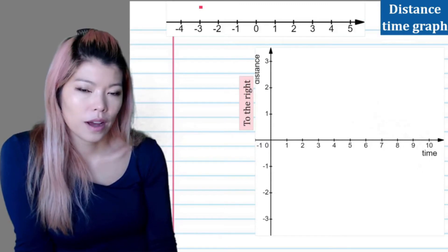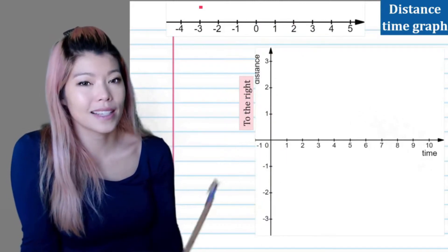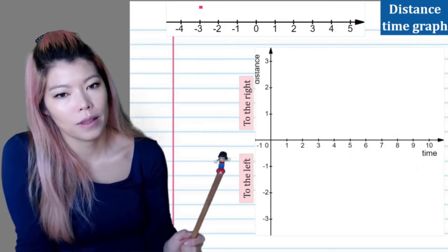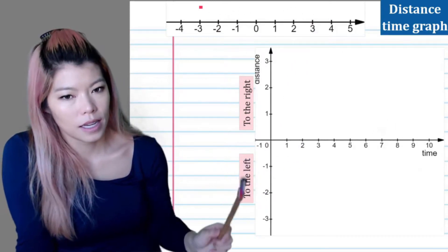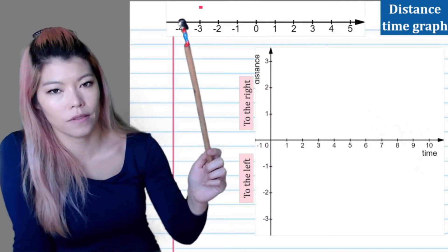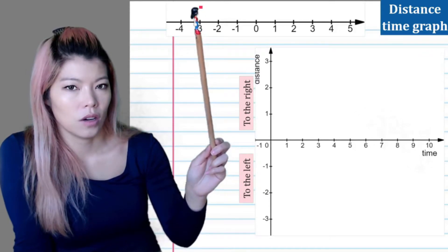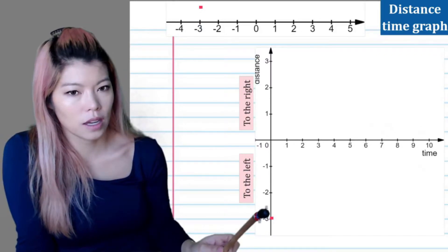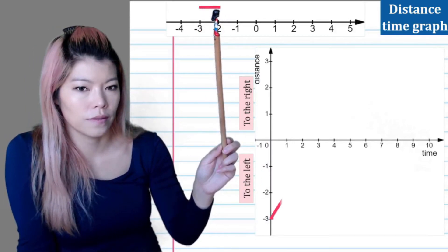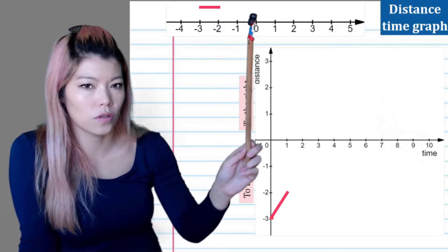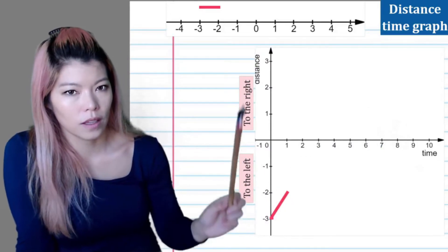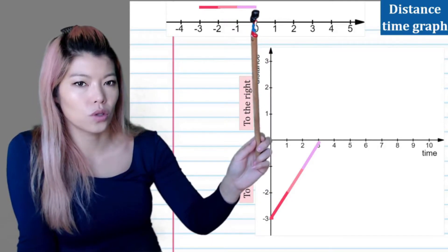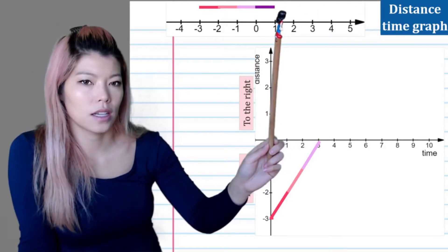Let's have a look at a distance-time graph. We're going to redo that motion of the toy walking and replay it second by second to show how you would draw it. The positive side of the y-axis is to the right, and the negative y-axis is when she's walking to the left. Initially she started at position negative three — three away from the center. In the first second she walks to negative two, then to negative one, then reaches zero. You can see the graph approaching zero, then she walks to the right of the graph.